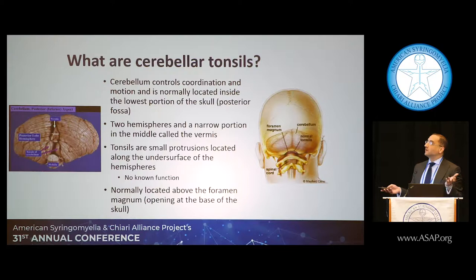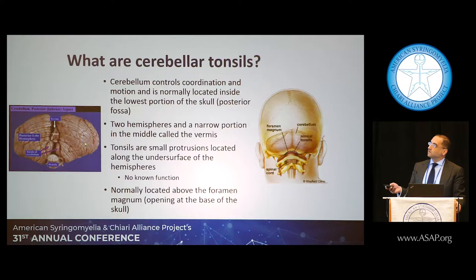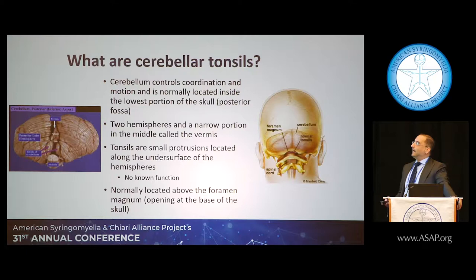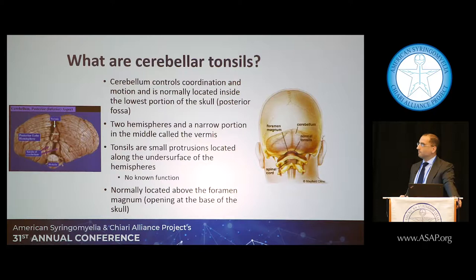What are the cerebellar tonsils? Looking at the back of the head, this is the cerebellum. Looking from the very bottom straight up, here's the spinal cord, the two lobes of the cerebellum, and the central part called the vermis — the worm. Then you have the tonsils, which are these two little appendages hanging off the side. There's no known function for the tonsils, which is why shrinking them in surgery doesn't cause any clinical effect.